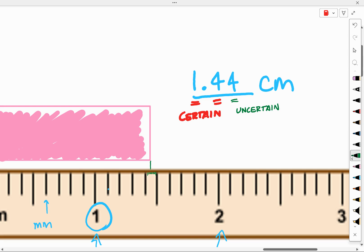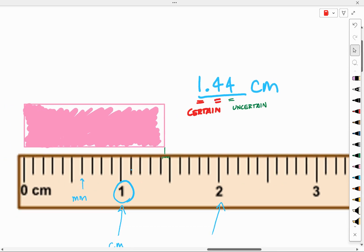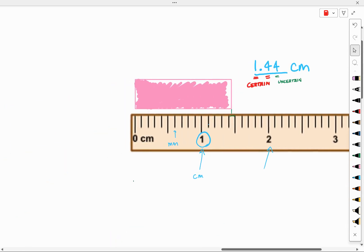Okay. So the one and the first four are certain. I know those, but the last one was estimated. That's an uncertain digit. Your goal when making measurements is to always estimate one more digit than the device gives you.